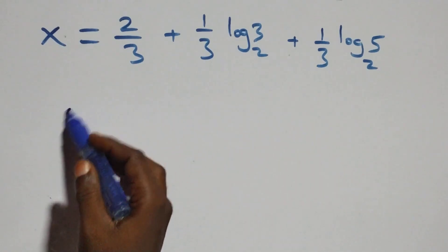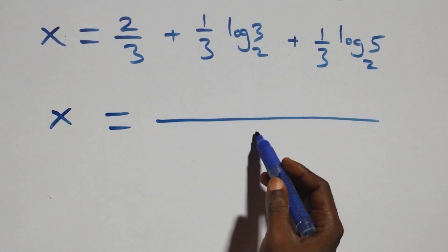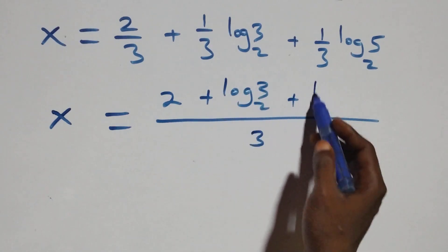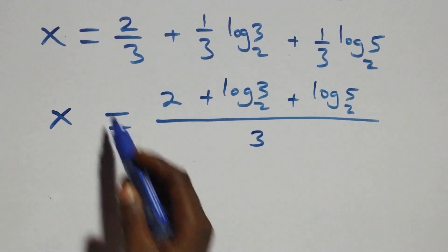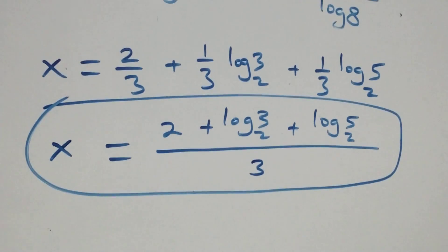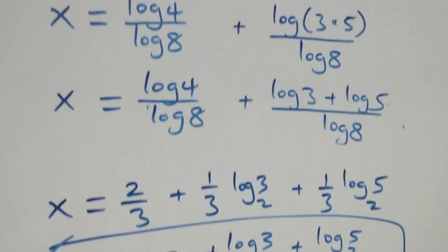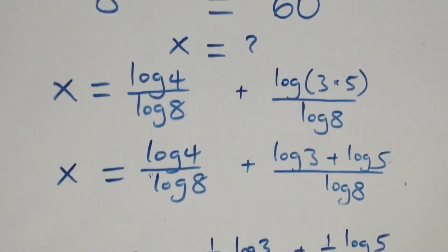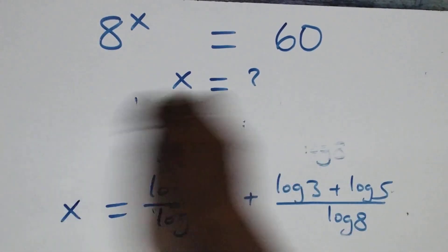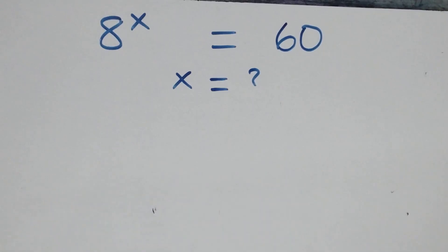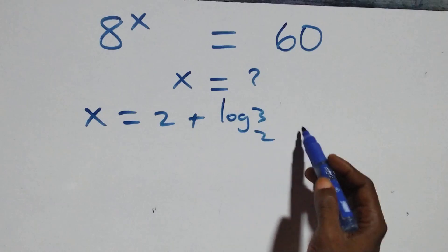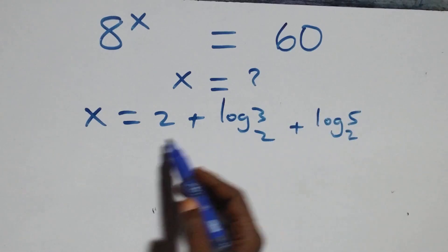Then here we bring this together as one fraction. The denominator is 3, and this becomes 2 plus log 3 base 2 plus log 5 base 2, and this is the value of x. So we have x equals to 2 plus log 3 base 2 plus log 5 base 2, all over 3. Then let's check here if this satisfies the given problem, that is, we substitute the value of x, which is log 2 plus log 3 base 2 plus log 5 base 2 all over 3.